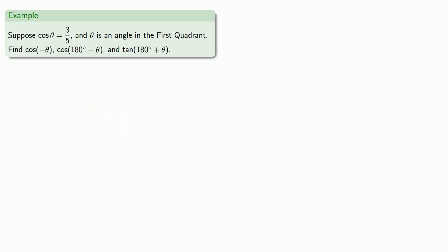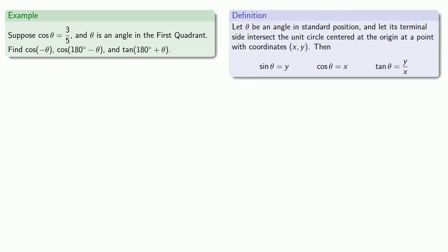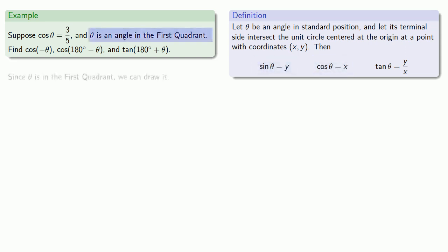Well, I hope we can find it because that's what the question is asking us to do. To begin with, remember that if theta is an angle in standard position, the terminal side of the angle passes through (x, y) on the unit circle x² + y² = 1, where x is the cosine and y is the sine. So since theta is in the first quadrant, we can draw it.